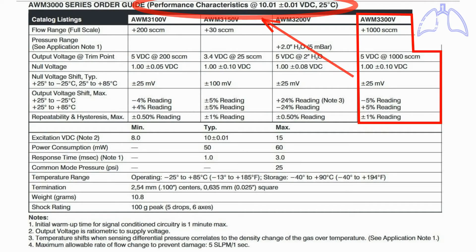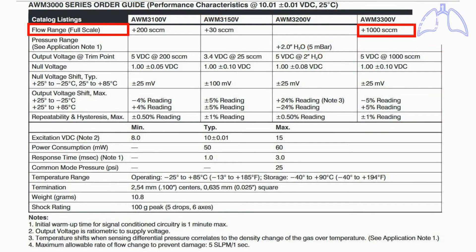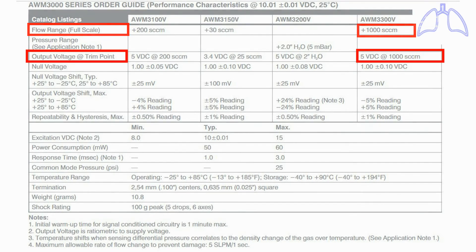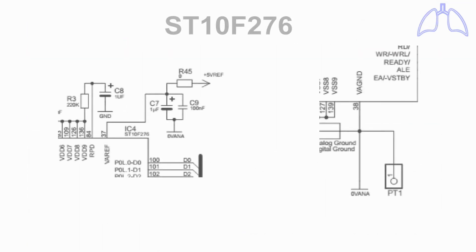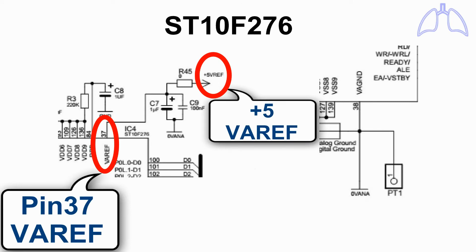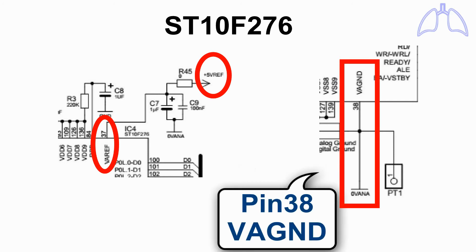These are the performance characteristics of the flow sensor at 10 volts supply voltage. The maximum flow is 1,000 standard cubic centimeters per minute, and its corresponding output voltage is 5 volts DC. In the ST10F276 microcontroller, pin 37 is connected to 5 volts as an analog reference, and pin 38 is connected to 0 as an analog ground. So the analog input voltage range is from 0 to 5 volts.